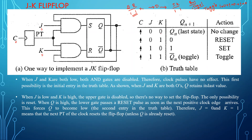Looking at the truth table: if J and K are both 0 — no change, previous state is held. If J=0, K=1 — R is high, meaning reset. If J=1, K=0 — S is high, meaning set. If J=1, K=1 — in SR this was illegal, but in JK it toggles. If you connect an LED at the output, it will turn on and off continuously as long as the clock input is given. That continuous alternation is the toggle state, caused by the feedback signal.